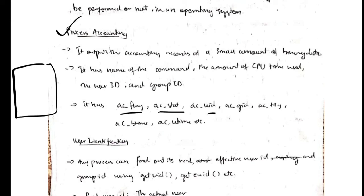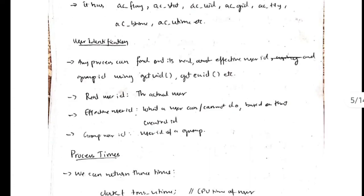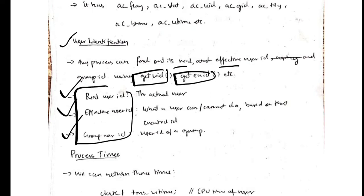User identification means any process can identify if it is a real or effective user by checking the UID and GID of the user. There are three types of users: real user ID, effective user ID, and group user ID. Whenever a process wants to check any of these, it can call the appropriate functions to get the type of ID it uses.